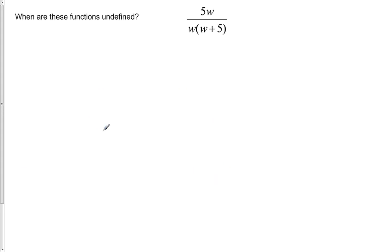Let's do one last example here. This function, same thing, doesn't seem to have any problem with roots or anything else, but we do have potential zeros in the denominator. So let's set that denominator equal to zero. We have w times w plus 5 equals zero.